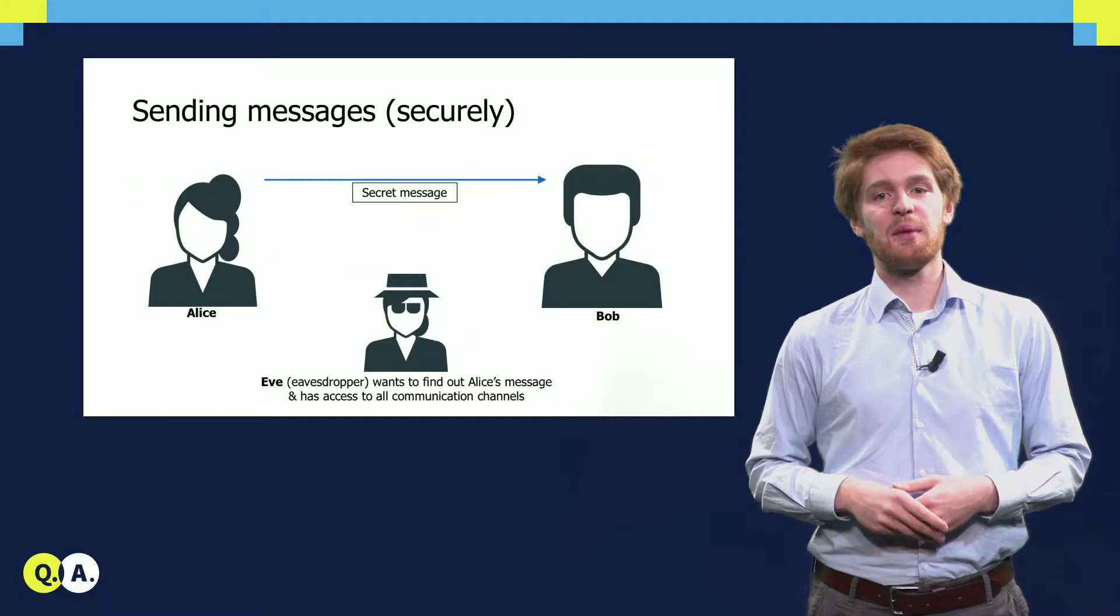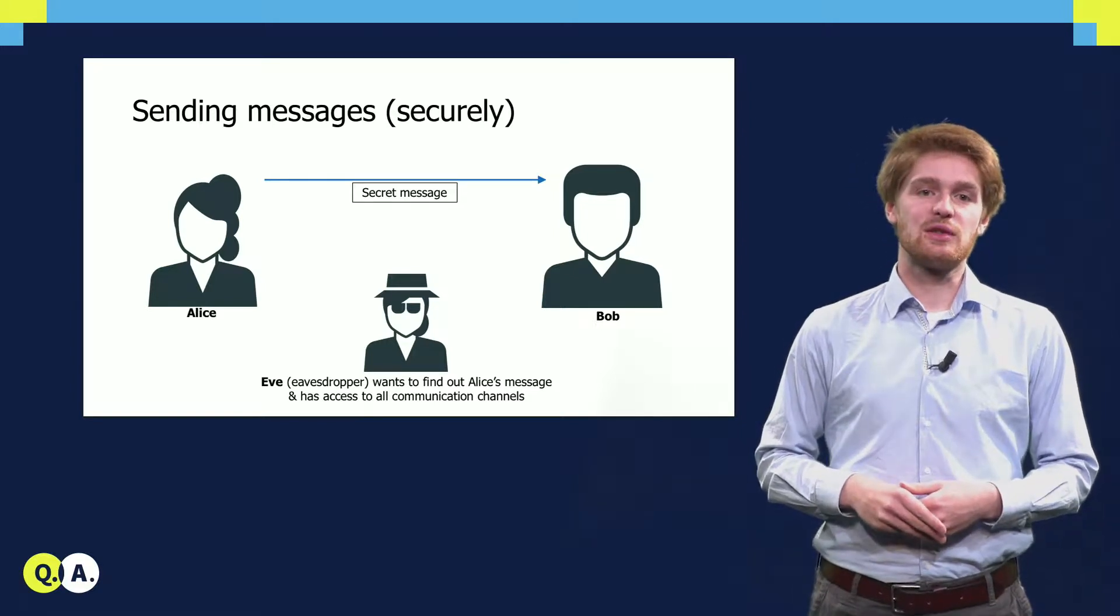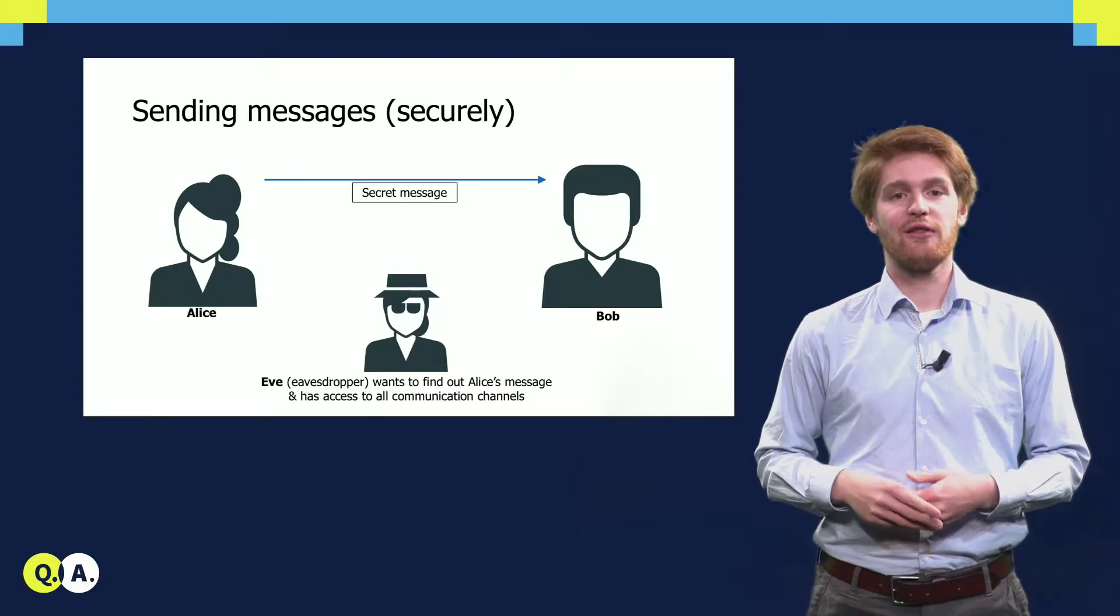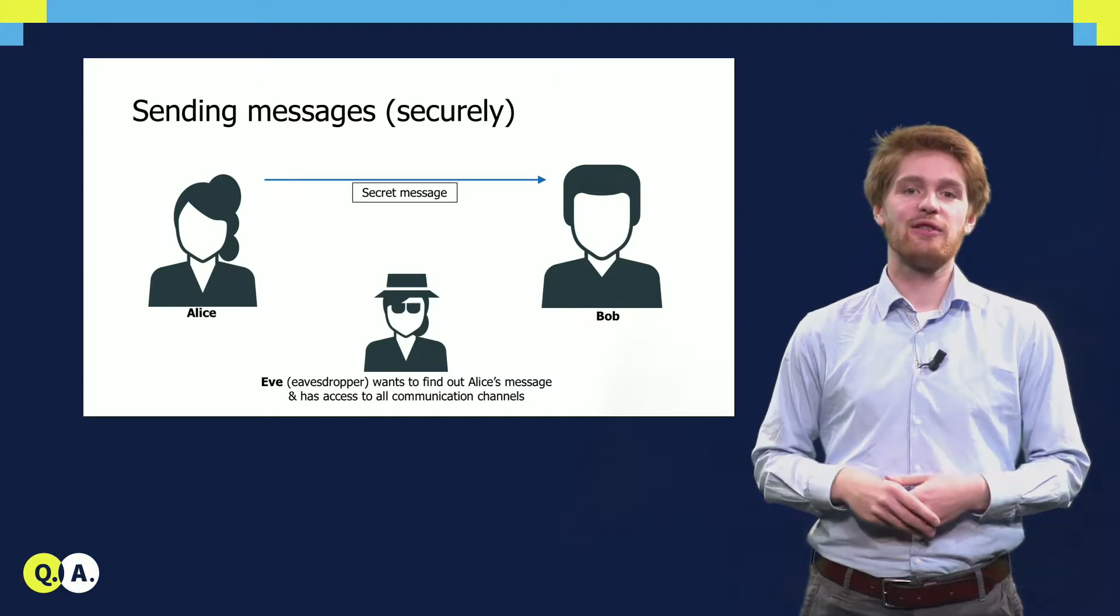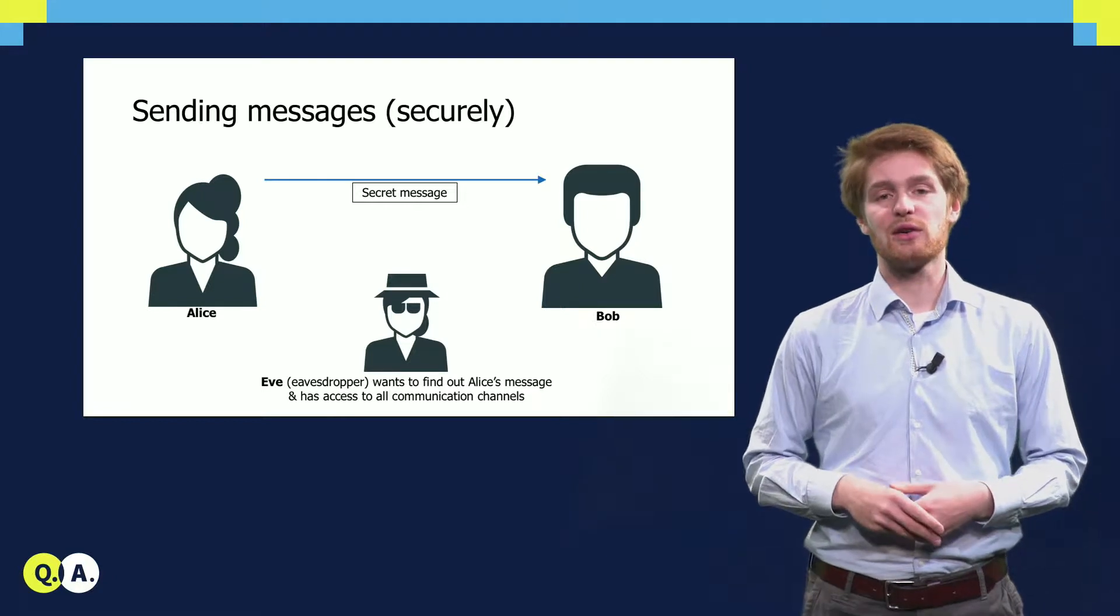In this video, we will consider the following scenario. Alice, here on the left, wants to send a secret message to Bob, on the right. Unfortunately, Alice and Bob are far away from each other, and only have means to communicate that can be intercepted by an eavesdropper, usually called Eve.